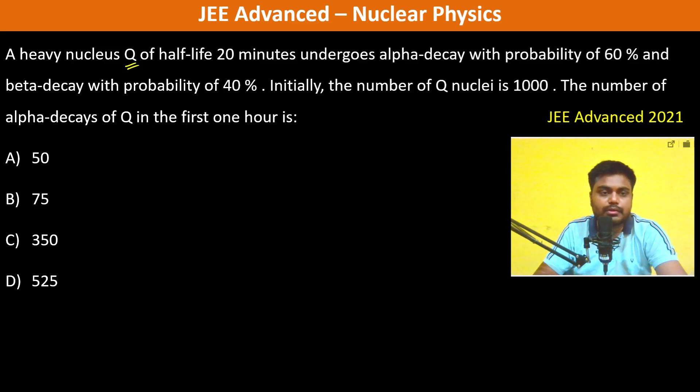I have a nucleus Q of half-life 20 minutes that undergoes alpha decay with a probability of 60% and beta decay with a probability of 40%. Initially, the number of Q nuclei is 1000. The number of alpha decays of Q in the first hour is: